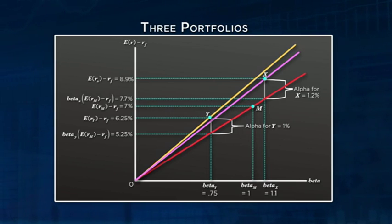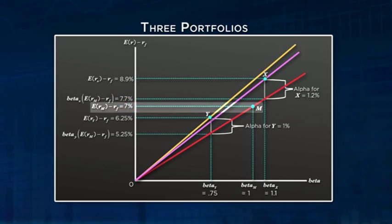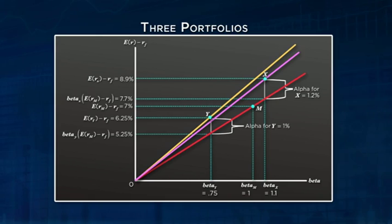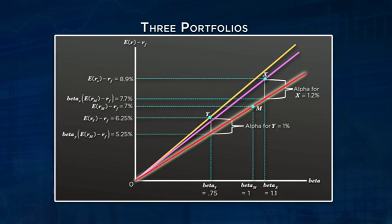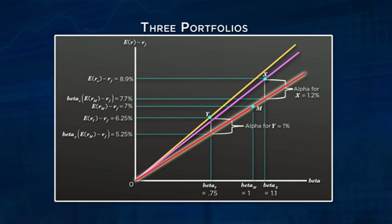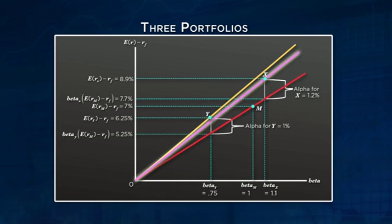Imagine a plot of expected return minus the risk-free rate for each portfolio against its beta, with zero denoting the origin. Let one of the portfolios be the benchmark portfolio — call this M, for the market. This portfolio by definition has a beta of one and has an average return equal to the average return on the market. Let's say that the average return on the market in excess of the risk-free rate is seven percent. Imagine a line emanating from the origin through portfolio M — call this the OM line. This line depicts the relationship between the average excess return and beta as implied by CAPM. Since the market has a beta of one by definition, the slope of the OM line is the market risk premium, which in this case is seven percent.